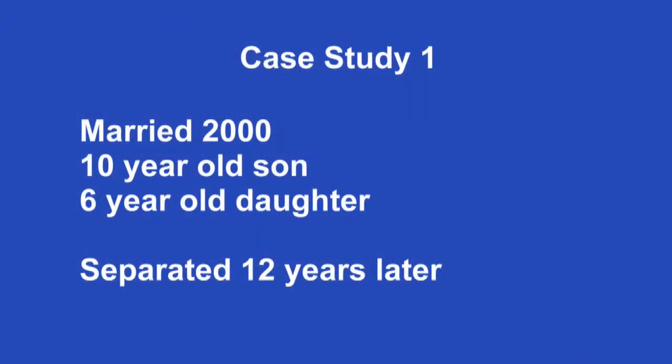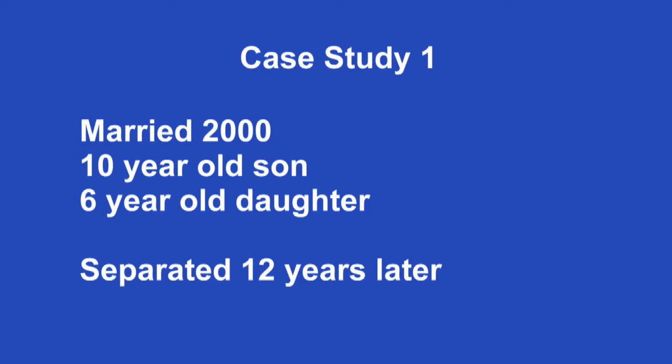Karis, we are now going to run through a few scenarios covering parental responsibility. For my first example: a couple married in 2000, they have a 10-year-old son and a six-year-old daughter, and 12 years later the parties separated. What is a typical arrangement for the children? Ideally, parents would come to an agreement regarding where the children live and how much time the children spend with each parent.